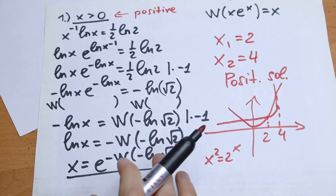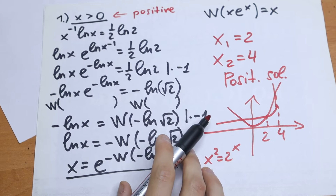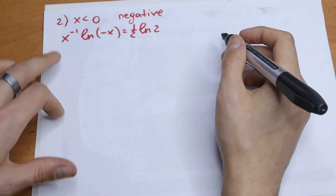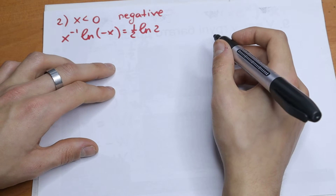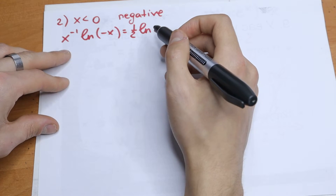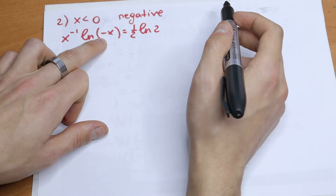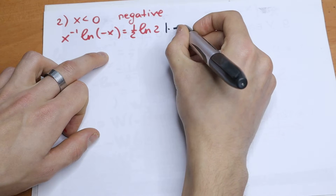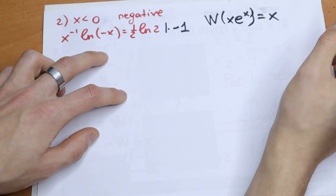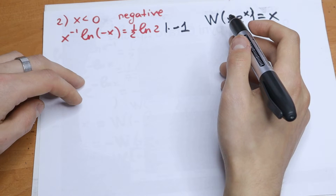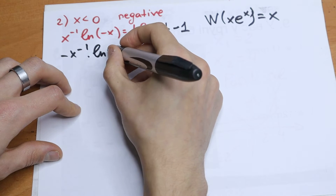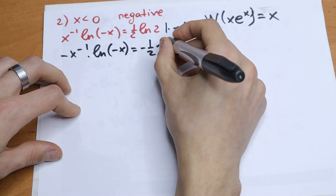But what about the negative root? Because we will have a negative one as well. Let's do the same thing using the Lambert W function. We will have x to the minus one power times natural log of minus x equal to one over two times natural log 2. The Lambert W function form is x·e^x = x — let's try to create something like that.